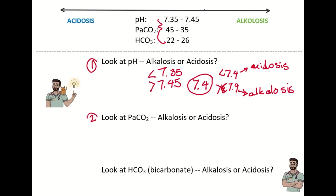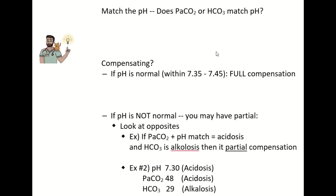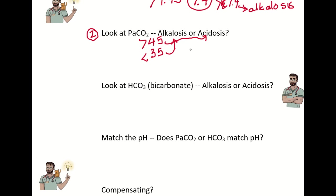Step two is to look at the PaCO2. If it's greater than 45, that's acidosis; if it's less than 35, that's alkalosis. Step three is to take a look at the bicarbonate — HCO3 greater than 26 suggests alkalosis, and less than 22 indicates acidosis.